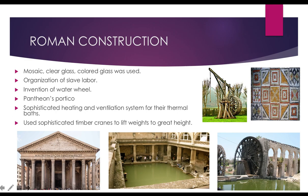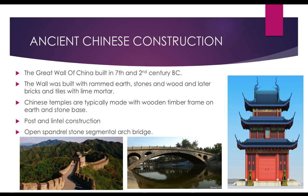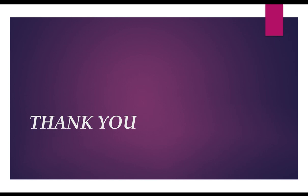Finally, ancient Chinese construction. The Great Wall of China, built in the 7th and 2nd century BC, still stands strong. It was built with rammed earth, stones, wood, and later bricks and tiles with lime mortar. Chinese temples have a completely different construction style using posts and lintels. They also had the open spandrel stone segmental arch bridge. The details of these constructions will be covered in later modules. Thank you very much for your patience; if you have any doubts, do send them.